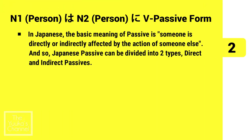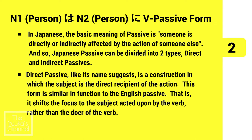In Japanese, the basic meaning of passive is that someone is directly or indirectly affected by the action of someone else. Japanese passive can be divided into two types: direct and indirect passives. Direct passive, like its name suggests, is a construction in which the subject is the direct recipient of the action. This form is similar in function to the English passive — it shifts the focus to the subject acted upon by the verb, rather than the doer.